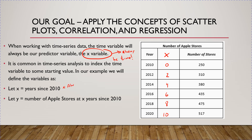Always look for this, because if you just plug in 2010, 2012, and so on into your calculator, you're going to get different results — you're going to get a different regression equation. And then we're going to let Y be the number of Apple stores. At this point we have two variables defined: an X variable and a Y variable.